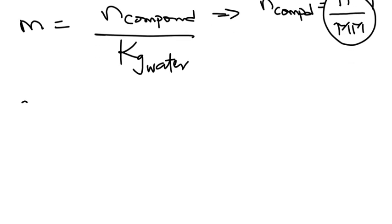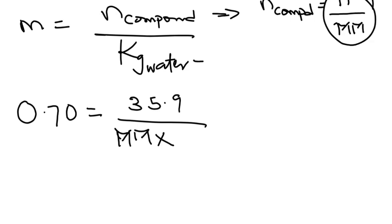So I would say that 0.70 equals the mass, which is 35.9, divided by its molar mass, multiplied by the kilograms of water. We have 150.0 grams divided by 1000, so 0.150 kilograms.